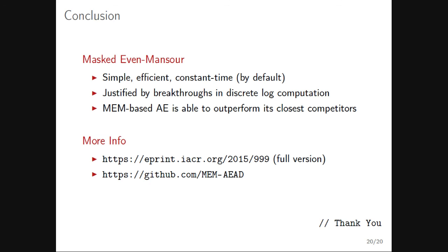Q: What happens if L equals zero? A: If you feed the LFSR with zeros, you have to ensure the initial state is not completely zero by including some constant values at initialization. Otherwise, the LFSR would always update to zero, giving constant zero masking, which must be prevented.